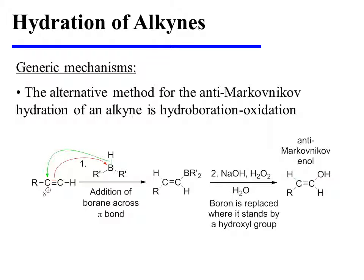In step two of the reaction, boron is replaced where it stands by a hydroxyl group to afford the anti-Markovnikov enol. The mechanism for this second step of the reaction can be found in the video on the hydroboration-oxidation of alkenes.